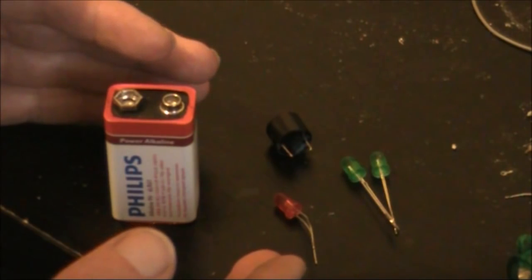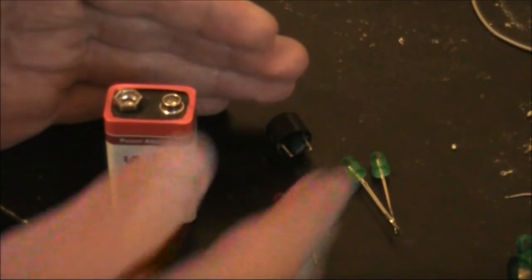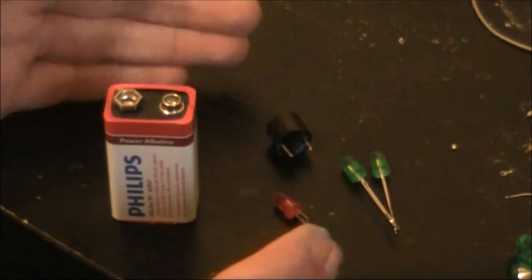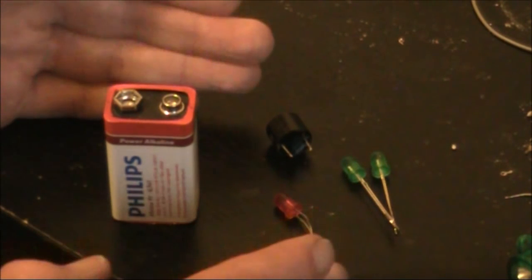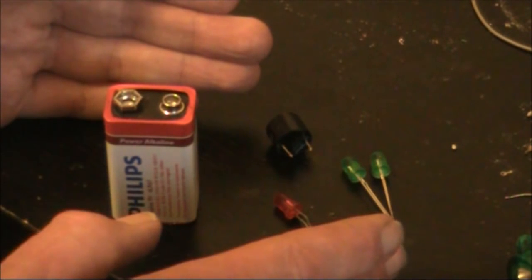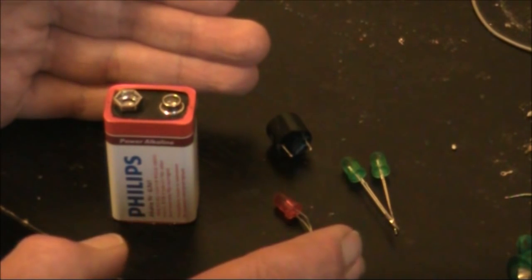Here, as well as the 9V battery, I've got a DC buzzer and some LEDs. The red is just an ordinary LED and the green ones are flashing. We'll connect these parts up in various configurations and see what effects they can have.